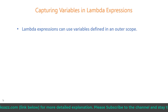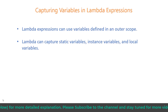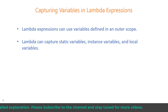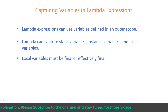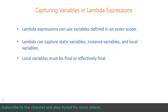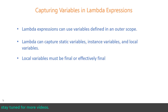In summary: lambda expressions can use variables defined in an outer scope; they can capture static, instance, and local variables; local variables must be final or effectively final. We also saw the side effects of mutating objects inside lambda expressions, which you should avoid. Thanks for watching and see you in the next video.